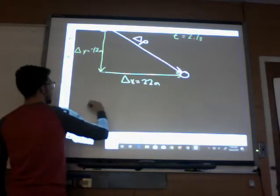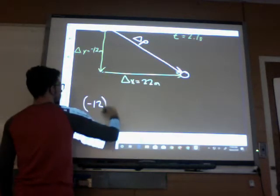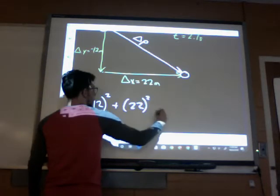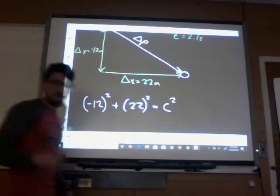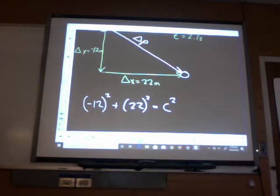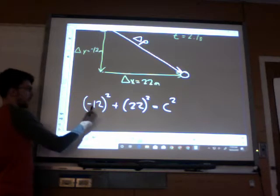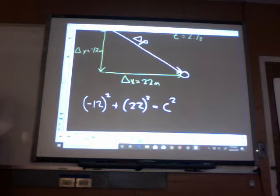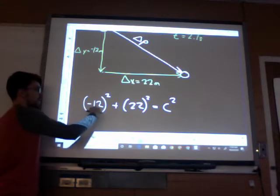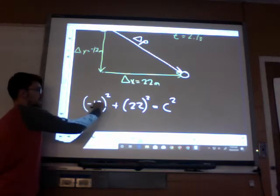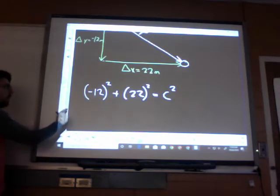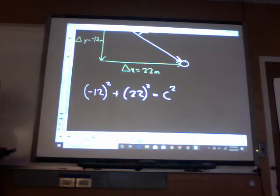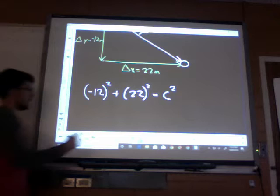When you plug in your numbers, you're supposed to put them in parentheses. So negative 12 squared plus 22 squared equals c squared. The parentheses are very important on this example because what's negative 12? What happens if you multiply two negatives? Positive. So if we forgot to put the parentheses, it would just be 12 times 12, and then you tack on the negative sign. So basically, when you're doing Pythagorean Theorem in this class, you can just drop all the negatives.